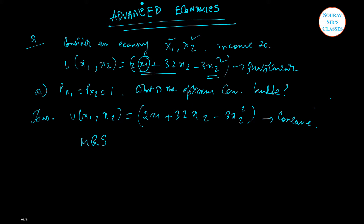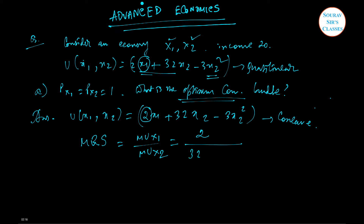You can check our videos on concavity and quasi-concavity. Now, MRS is nothing but ∂U/∂x1 divided by ∂U/∂x2. Partially differentiating: ∂U/∂x1 gives 2, and ∂U/∂x2 gives 32 minus 6x2. So MRS equals 2 divided by (32 minus 6x2). The budget line is x1 plus x2 equal to 20, since prices are both 1.